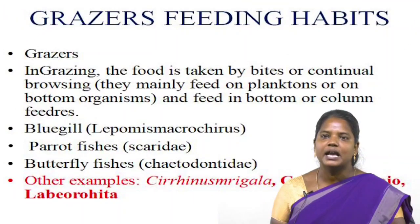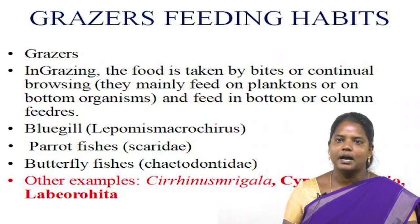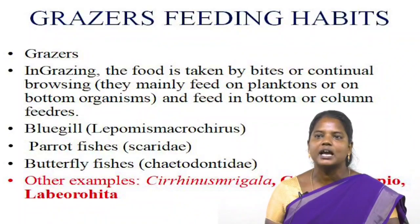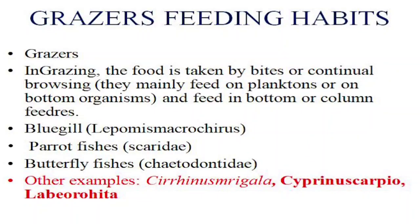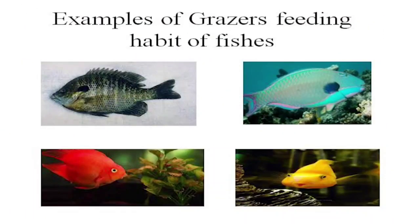Grazers feeding habits: in grazing, the food is taken by bites or continual browsing. They mainly feed on planktons or on bottom-dwelling organisms, and are bottom or water column feeders. Examples include bluegill, parrot fishes, butterfly fishes, Cirrhinus mrigala, Cyprinus carpio, and Labeo rohita.